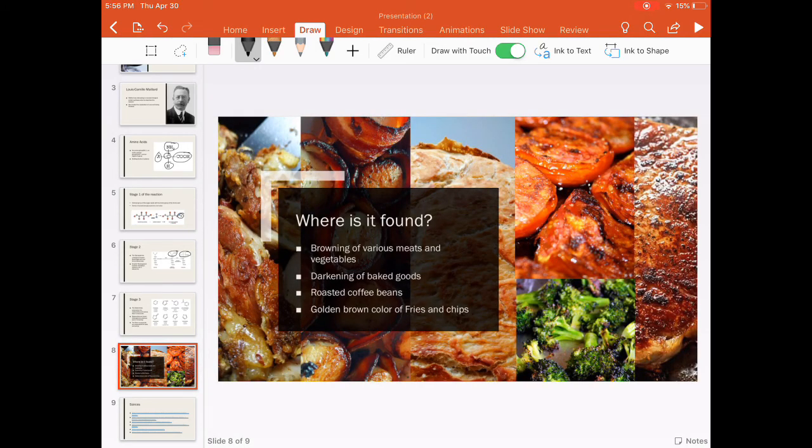Where can you find the Maillard reaction? There are many foods you eat every day that contain compounds resulting from the Maillard reaction. Some examples include browned meats and roasted vegetables, the outer layer of baked goods like breads and cookies.